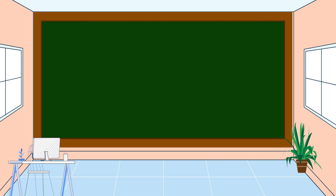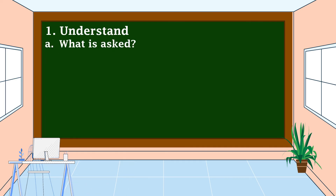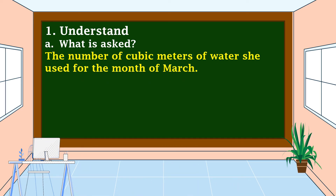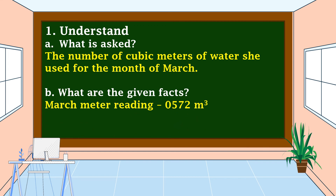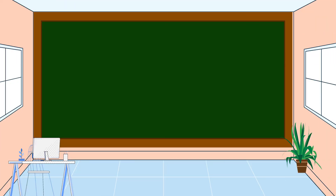We're going to use the four-step plan again. First, we understand the problem. What is asked: the number of cubic meters of water Anna used for the month of March. The given facts are: the March meter reading is 572 cubic meters, and the previous meter reading is 434 cubic meters.